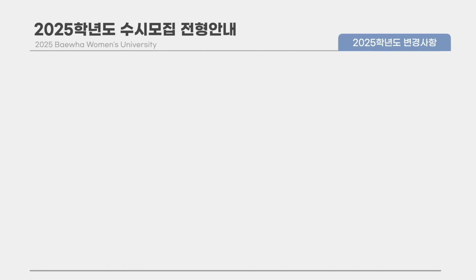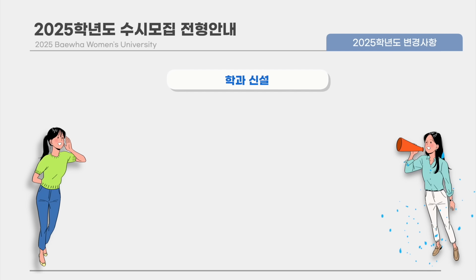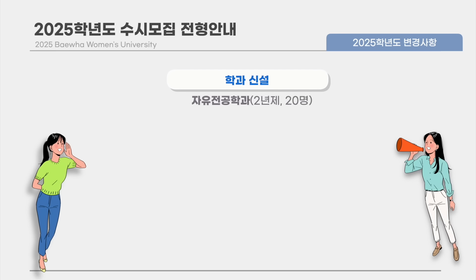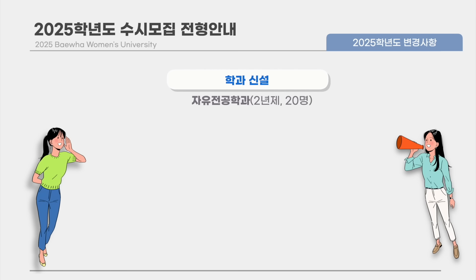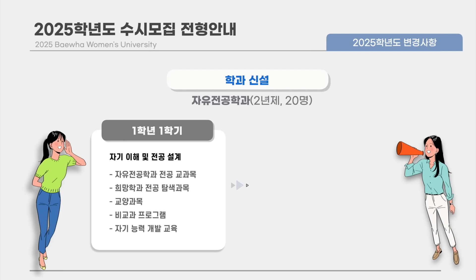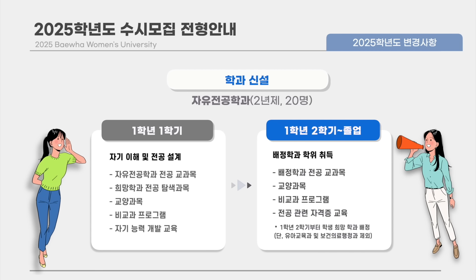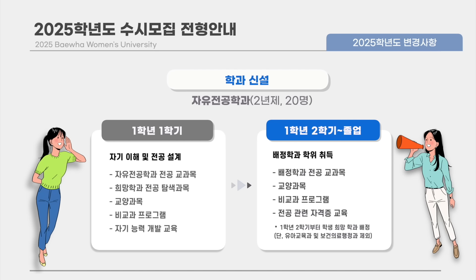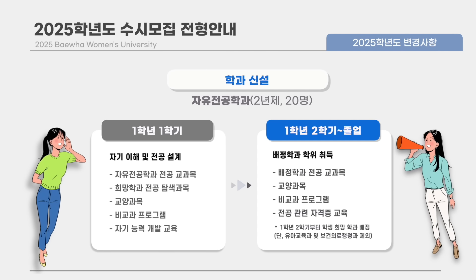2025학년도 주요 변경사항에 대해 설명드리겠습니다. 2025학년도에 자유전공학과가 신설되었습니다. 자유전공학과는 학생이 대학 입학 후 교양과목과 관심학과 기초전공과목을 이수 후 1학년 2학기에 학과와 전공을 선택할 수 있습니다.